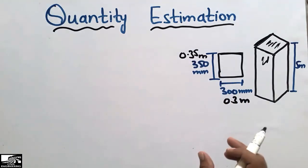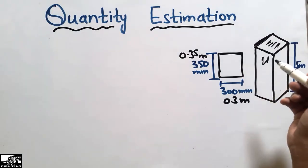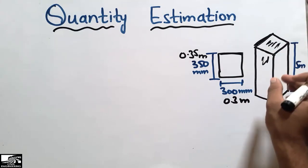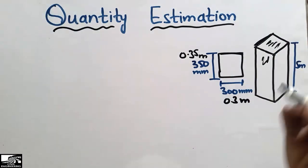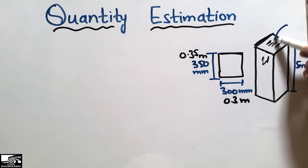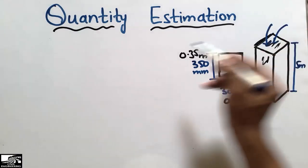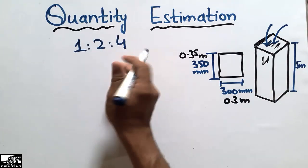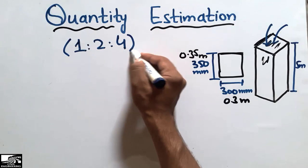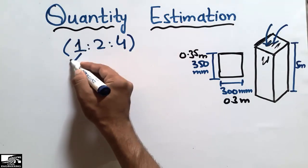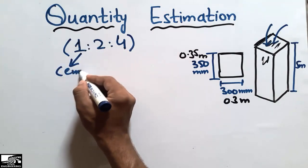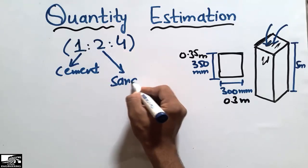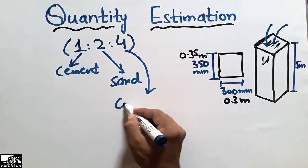We are interested to find the quantity of cement, sand, and coarse aggregate in this column. The concrete poured in this column is of the ratio 1:2:4. The first ratio represents cement, the second represents fine aggregate or sand, and the third represents coarse aggregate.